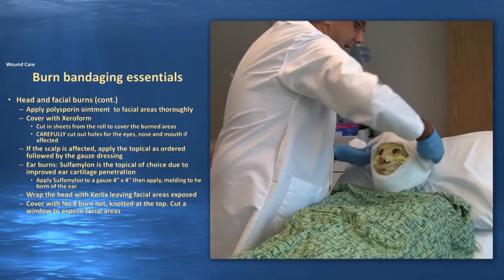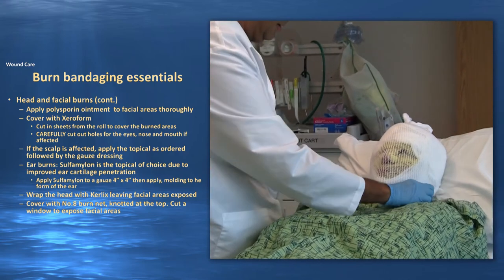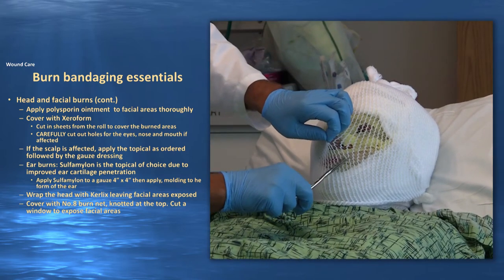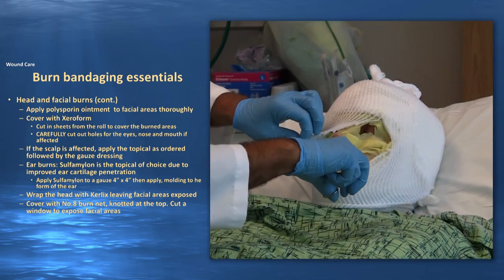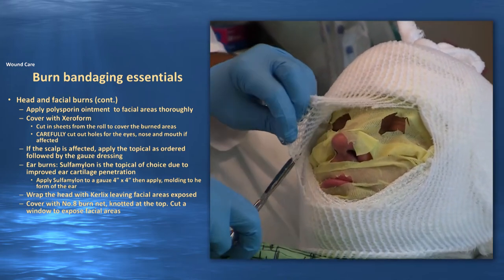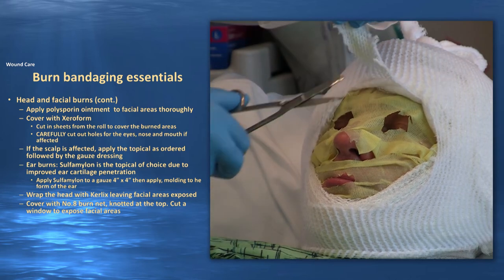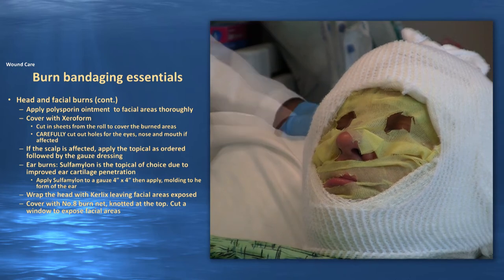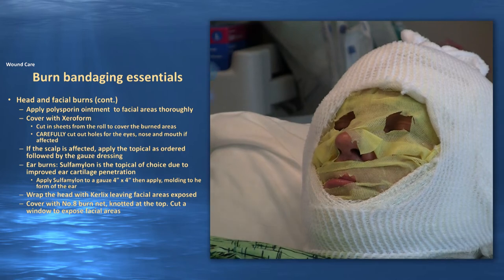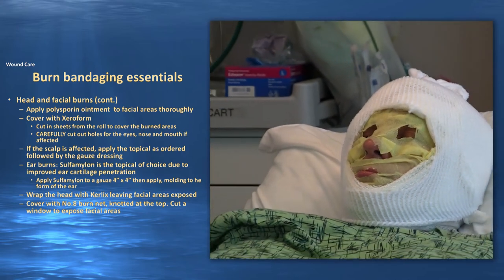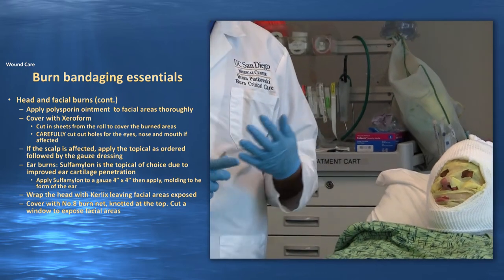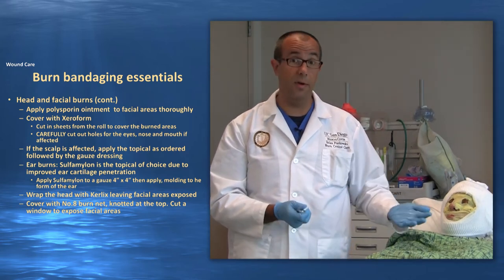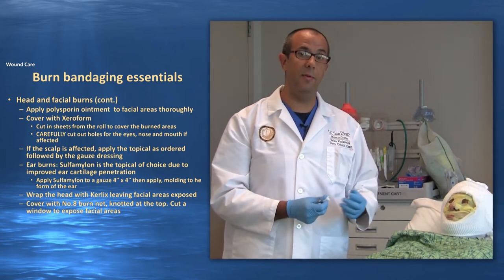Follow up the Curlex wrap with stretch netting — tie a little knot on top for closure and slide it over the top of the head and down over the face. Then cut a small window in the netting for visibility, taking just enough off to give them a window without losing the integrity of the netting that keeps the dressing intact. That is how you do a head and face bandage. The reason we put Xeroform over the polysporin is twofold: it keeps dressings from sticking and maintains a moist wound environment so facial burns don't dry out.